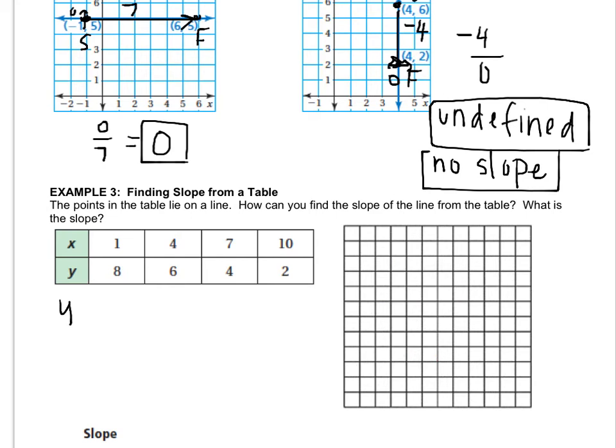So remember the slope formula is y2 minus y1 over x2 minus x1. And then you pick any two points that you want. So I will pick the first two. It doesn't matter. You can pick any two you want. Any two that are the friendliest for you.